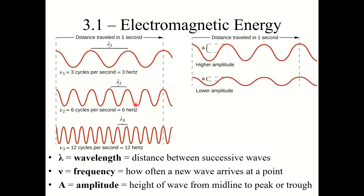The second wave shown has a much smaller wavelength — about half the size of the first wave — so it has six cycles per second, or six hertz. A third wave with an even smaller wavelength has an even higher frequency, so you can begin to see the relationship. The final term is amplitude, represented by capital letter A. Amplitude is the height of the wave from the midline to peak or trough, and it is the least important of the three terms.